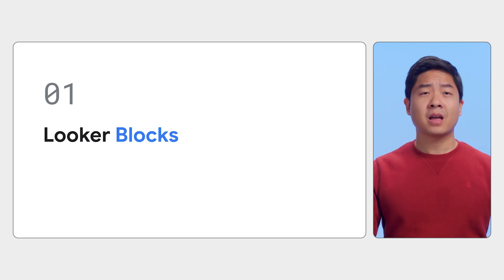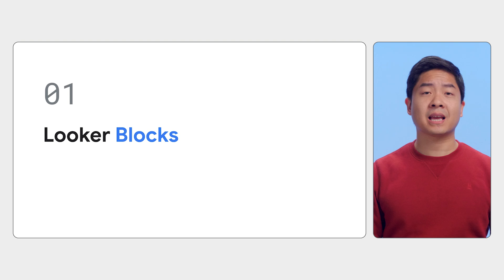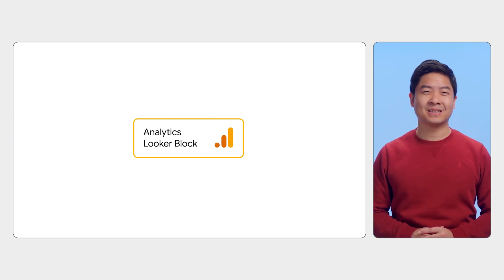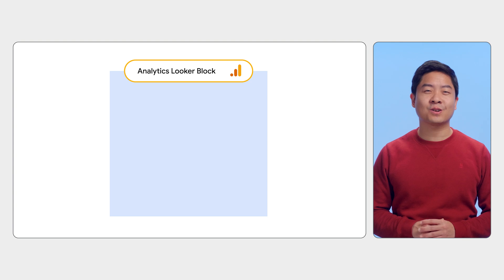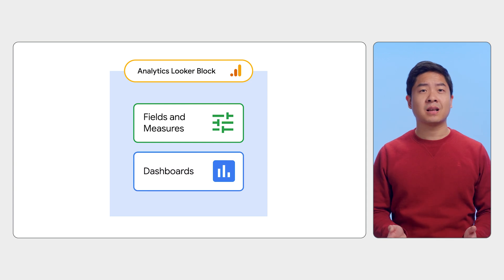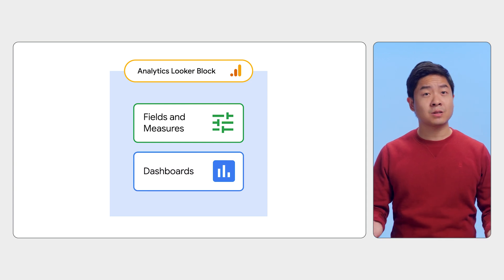What are Looker blocks? They are pre-built data models for common analytical patterns and data sources. For example, if your company uses Google Analytics, or GA for short, and you want to explore your GA data in Looker, the Looker marketplace provides a GA block to install as a starting point. The GA block configures your Looker fields and measures, so you can immediately start exploring your GA data with pre-made dashboards that analyze topics like user behavior.